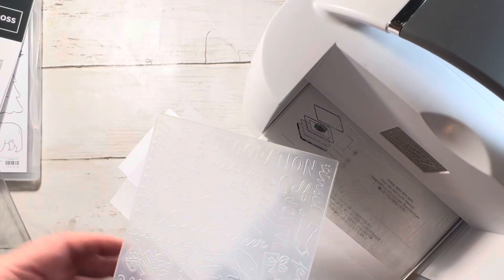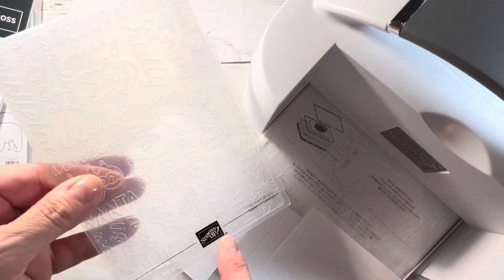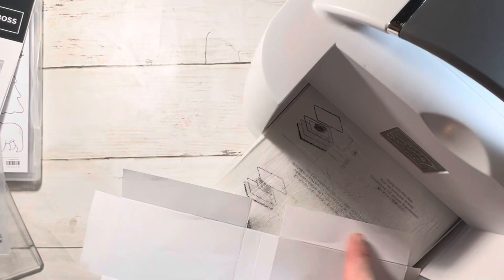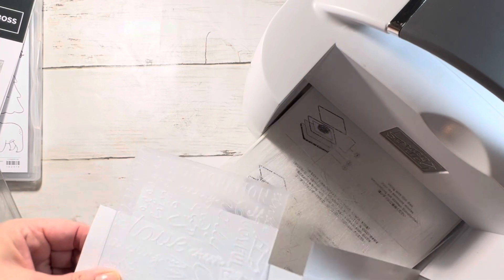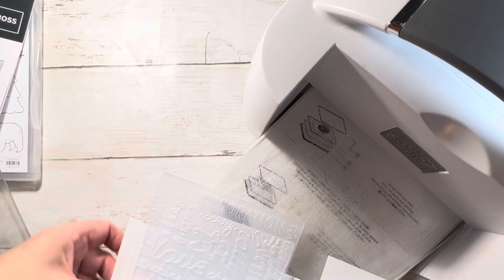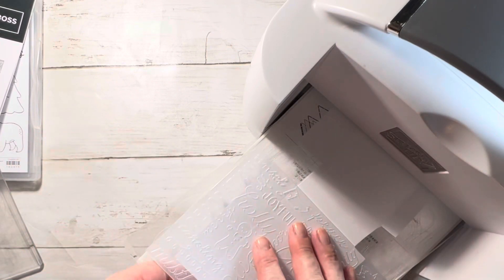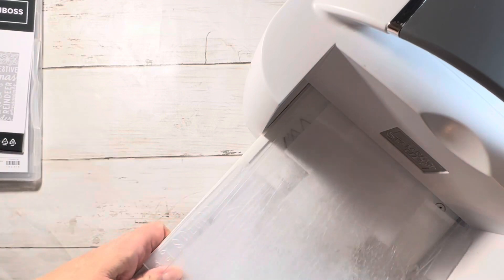When you emboss you'll have to do one side of the bag at a time, and so your longer edge is going to be the top. I just did it in sections—I just embossed the front of the bag and then the back of the bag, or the left side and then the right side.